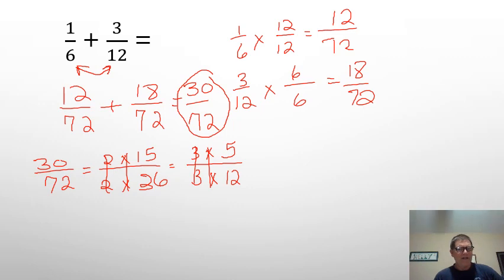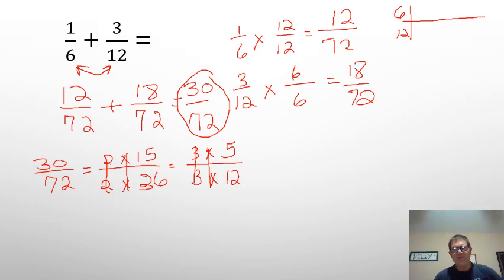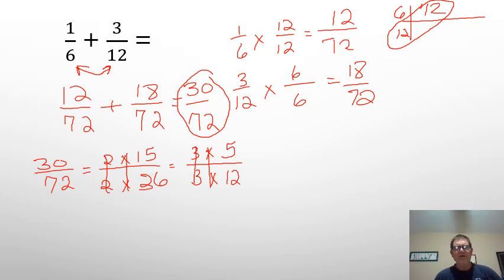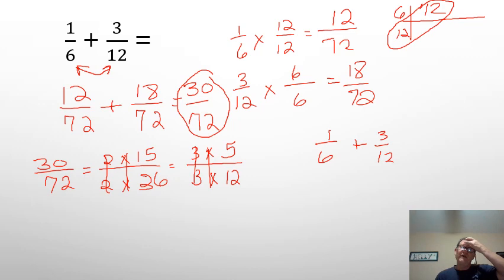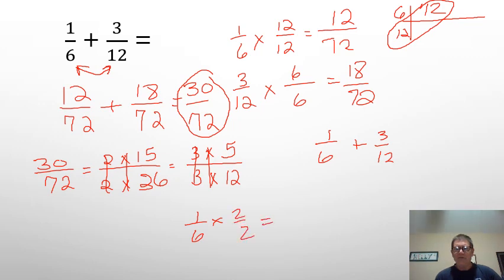Now let's talk about least common denominators. If I were to take both multiples of 6 and 12 and skip count to them, I want to find a multiple they both share — the smallest. I go 6, 12 — oh wait, look at that. They both are factors of 12. That really should be the first question you always ask yourself: can I turn one of the denominators into the other? I can turn this 6th into 12ths. I know 1/6 times 2/2 would give me 2/12. So I have 2/12 plus 3/12 equals 5/12.